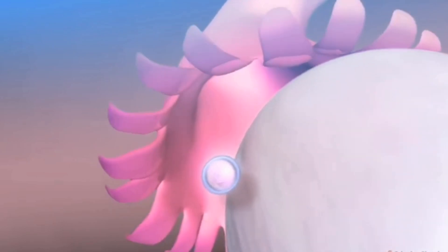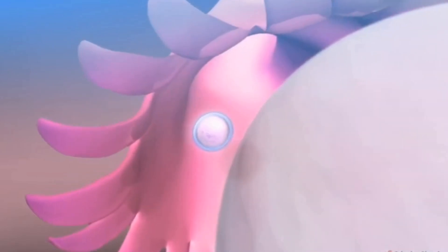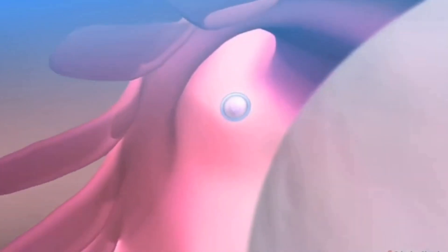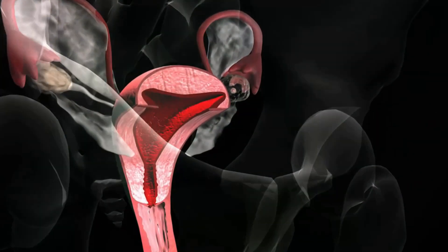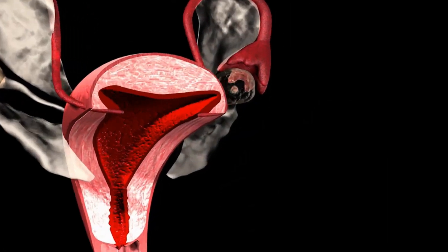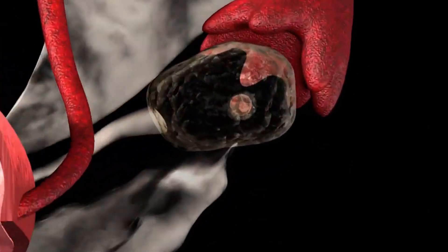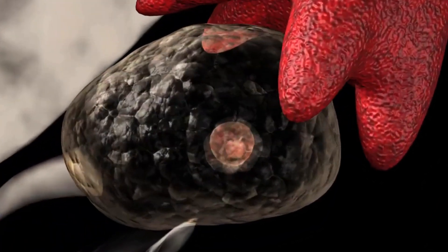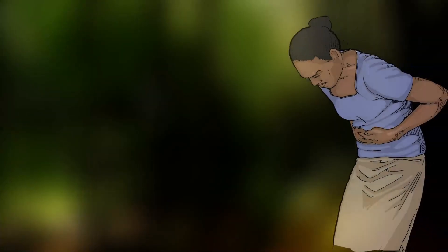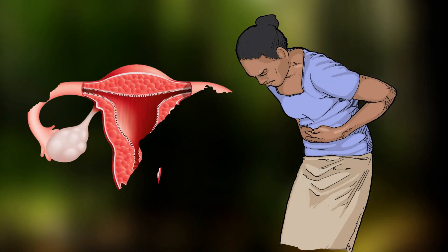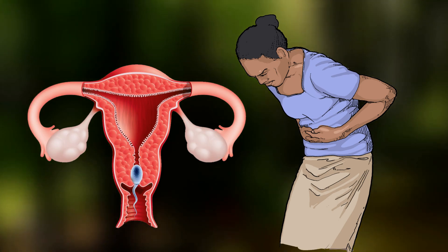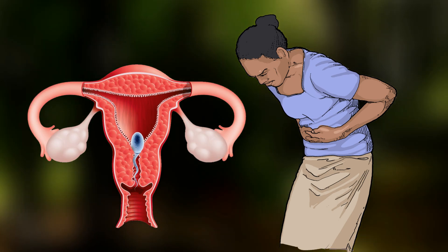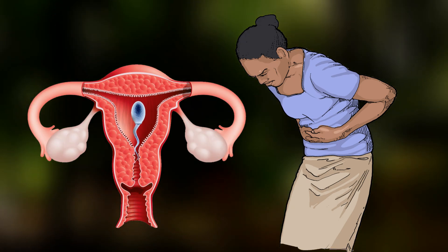Sperm can live inside the female reproductive tract for as long as 5 days after sexual intercourse, under the right conditions. Your chance of getting pregnant is highest when live sperm are present in the fallopian tubes during ovulation.